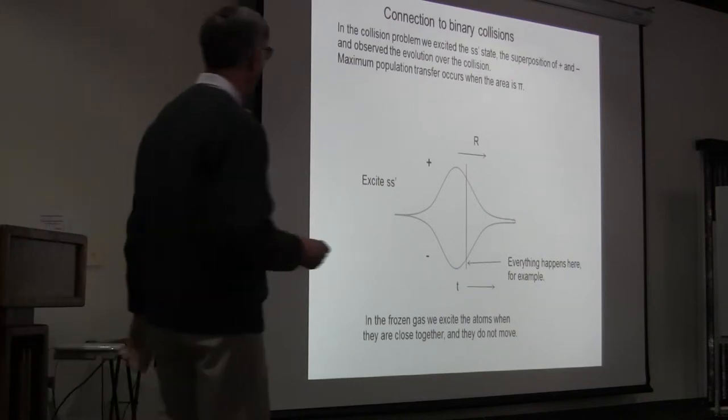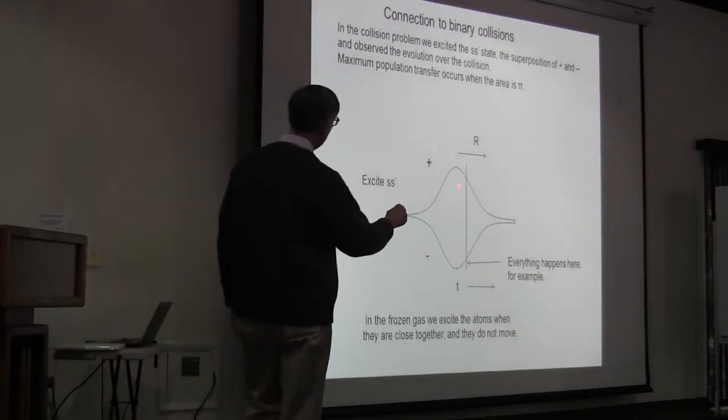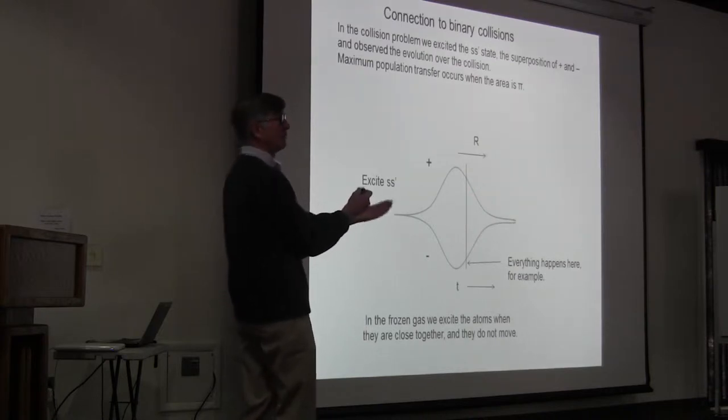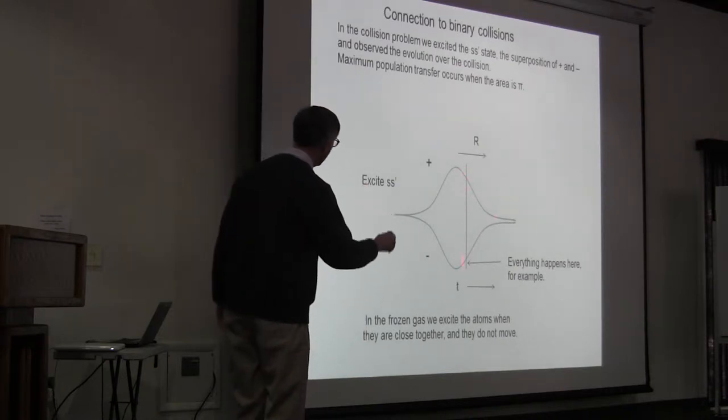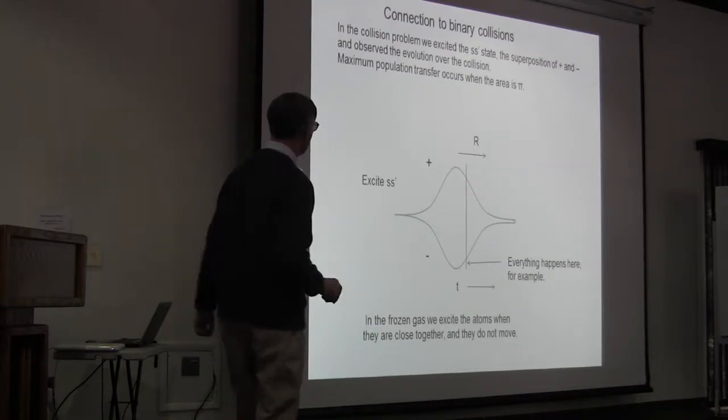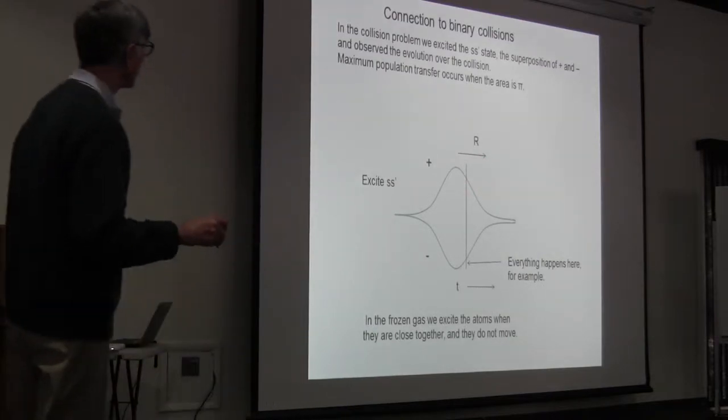In the frozen Rydberg gas, basically, everything is fixed at some radius. Two atoms are some distance apart, they're just sitting here. Nothing is moving on this picture. You're just sitting. Instead of thinking of this graph as time, it's a graph of the energy levels as a function of displacement.